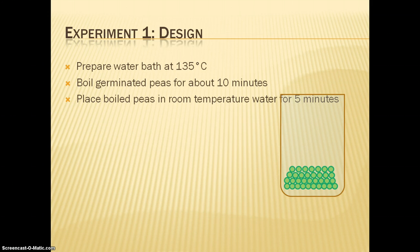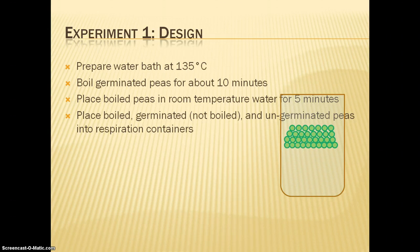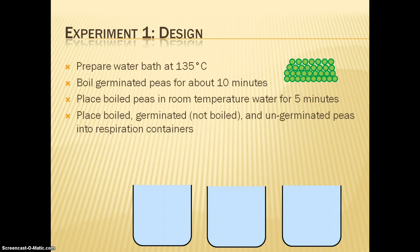The three types of peas provided, which are germinated, which we just boiled, and germinated which was not boiled, and then the ungerminated, should then be placed into three separate containers, respectively. Going into their respective containers.